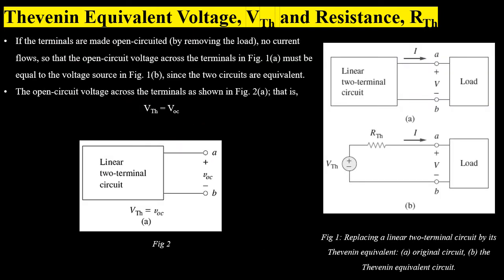As the first step, we remove the load from terminals A to B, making the circuit open circuit so no current flows in either case. The open circuit voltage across the terminals in figure A must equal the voltage across terminals A to B in figure B. Analyzing figure B, the open circuit voltage equals VTH, so in figure A the open circuit voltage at terminals A to B will also equal VTH — that is, the open circuit voltage must equal the Thevenin voltage.